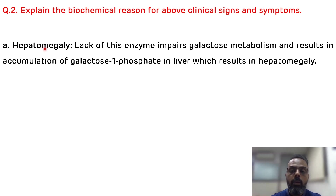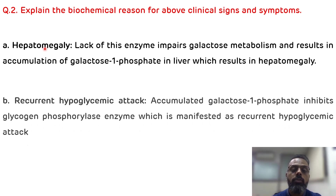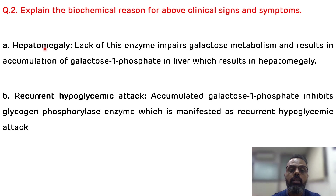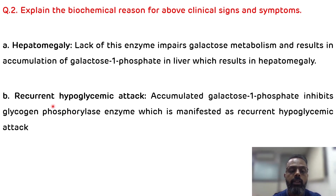The second clinical feature is recurrent hypoglycemic attacks. The blood glucose level is low because the accumulated galactose-1-phosphate inhibits the glycogen phosphorylase enzyme — the enzyme responsible for glycogenolysis. With inhibition of glycogen phosphorylase, there is no glycogenolysis and no release of free glucose, ultimately resulting in hypoglycemic attacks and loss of consciousness.